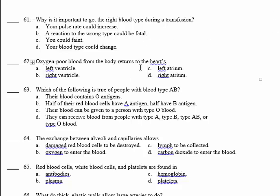Number 62: oxygen-poor blood from the body returns to the heart. The blood that contains more carbon dioxide than oxygen returns to the right atrium. 62, D.